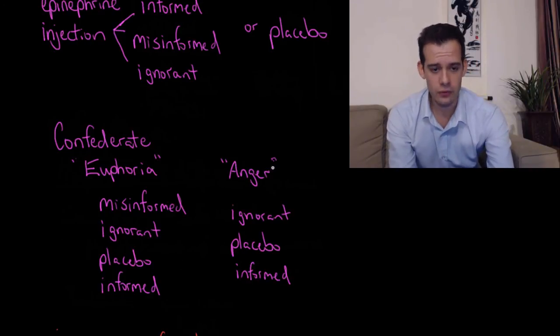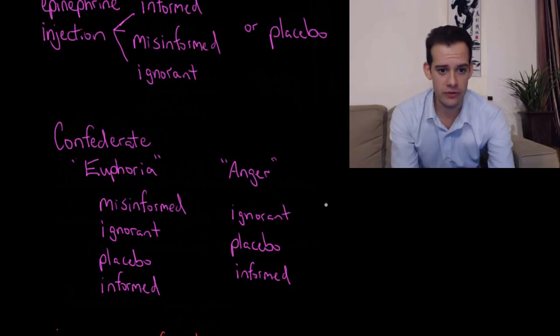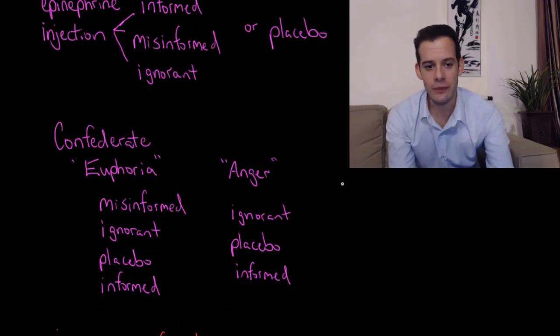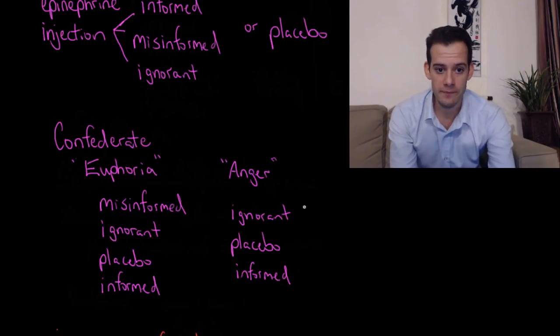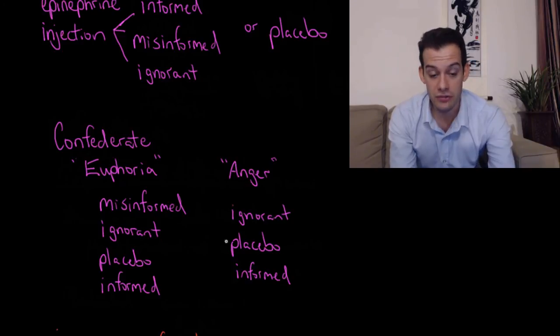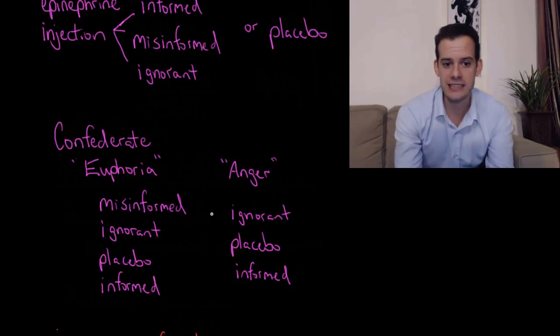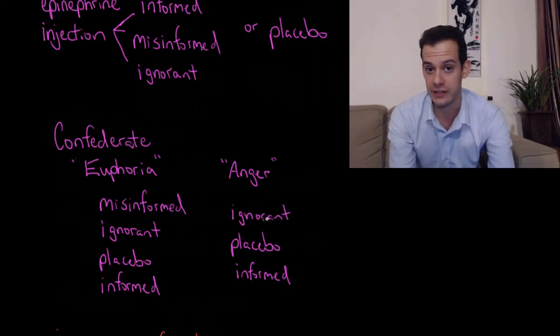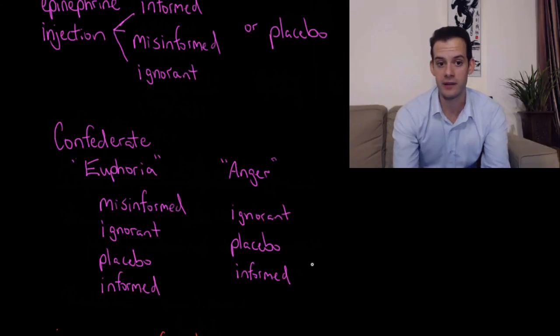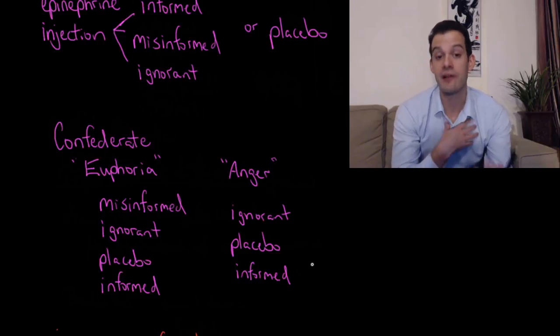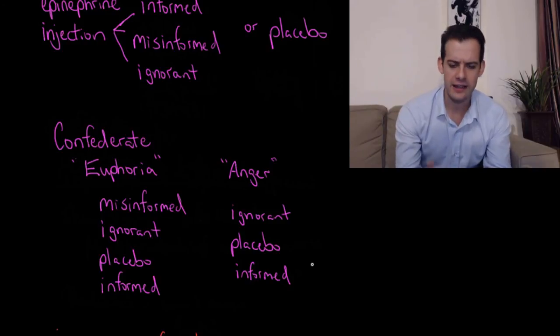In the second condition where we have the anger condition, they didn't actually have a group that was misinformed about this—it was originally meant to be a control condition. Anyway, they only were looking at three groups here: the people that were ignorant about the drug they had been injected with, the placebo group that was not injected with any drug, and the informed group which was injected but also told what the drug was going to do. As we see here, the people who felt most irritated after this were the people who didn't know where their physiological arousal was coming from—they were ignorant about the drug. Next were the people who didn't have any physiological arousal related to the drug, and lastly were the people who were informed. Again, they weren't tricked into thinking that they were angry because they thought they knew where their physiological arousal was coming from, and that it was coming from the injection they had gotten.